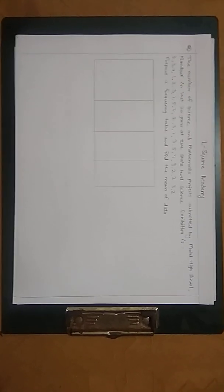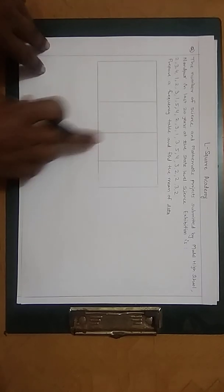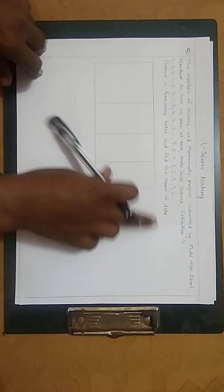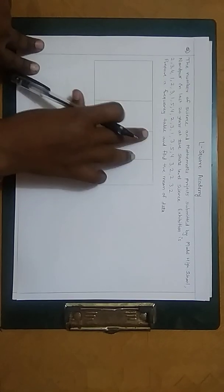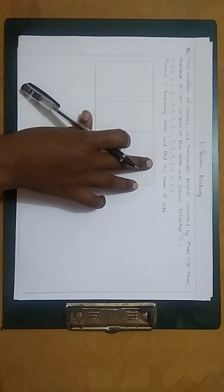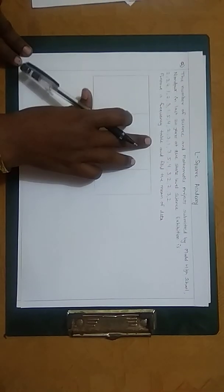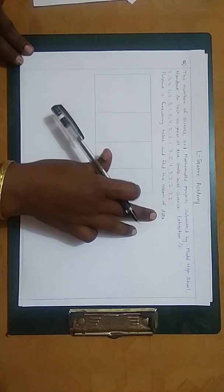Now the question about statistics is: the number of science and mathematics projects submitted by Model High School Nandpur in the last 20 years at the state level science exhibition. The data is given, and we need to prepare a frequency table and find the mean of the data.